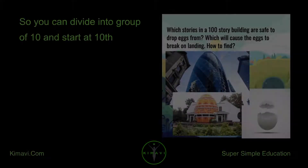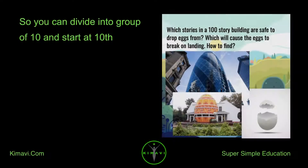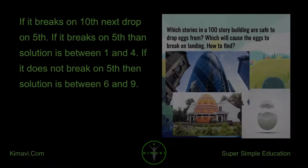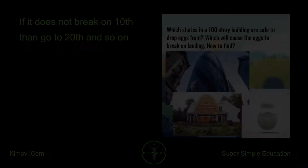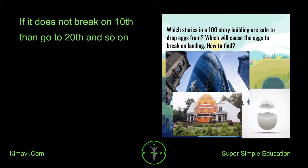You can divide into groups of 10 and start at the 10th floor. If it breaks on the 10th, next drop on the 5th. If it breaks on the 5th, then the solution is between floors 1 and 4. If it does not break on the 5th, then the solution is between floors 6 and 9. If it does not break on the 10th, then go to the 20th and so on.